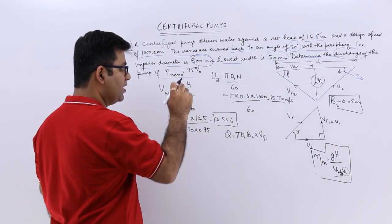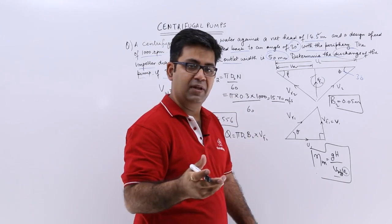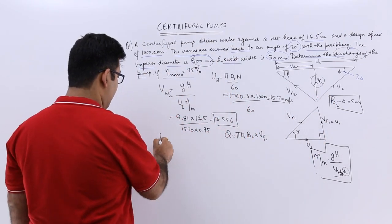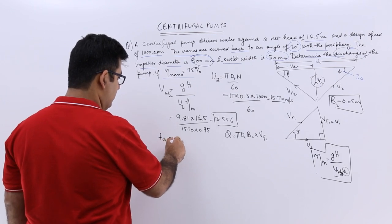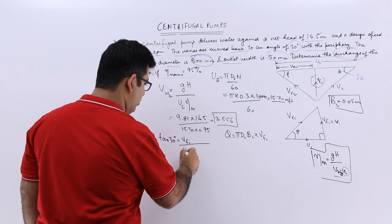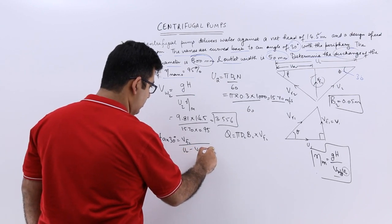Alright, so let us apply tan 30. So from tan 30 I can get the value for Vf2. So I will get tan 30 is equal to Vf2 by U2 minus Vw2.